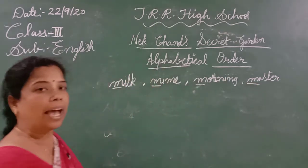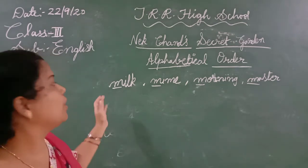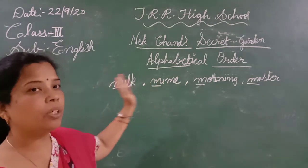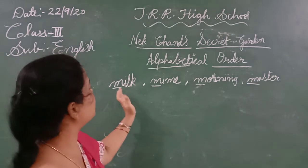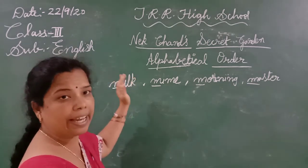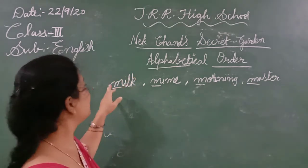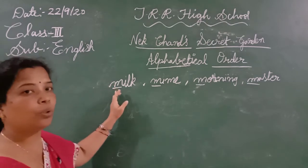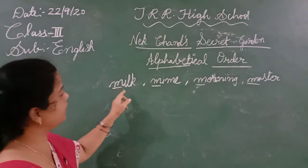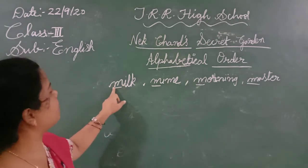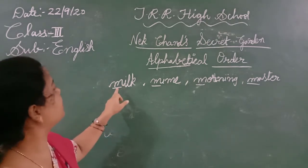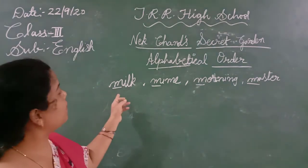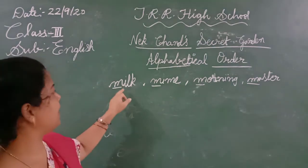As you have learnt in maths, when the numbers are the same — when they start with the same number — you have to go to the next number. The same applies here: you have to look at the next letter. Now see, every first letter — all the words start with M. So now we have to look at the next letter.